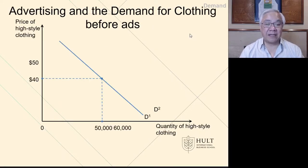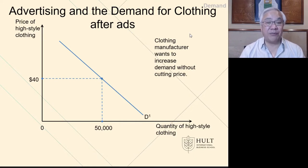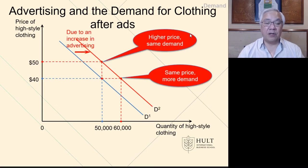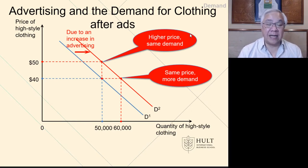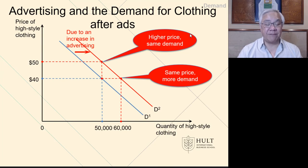Advertising could also have an effect. This is the demand curve before advertisements. Clothing manufacturers want to increase demand without cutting price, because they could sell more if they cut price — but what if they don't want to do that? They want to spur demand by advertising. The goal is to have advertising shift the demand curve to the right, such that at the same price we'll sell more product, or the same demand would be generated at a higher price. Both of these are positive outcomes for the company engaging in advertisements.